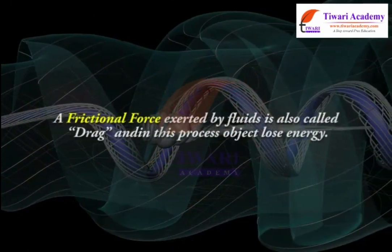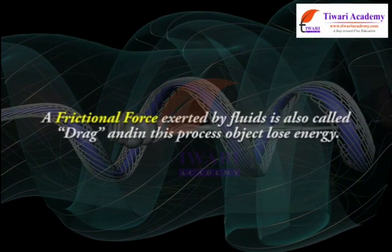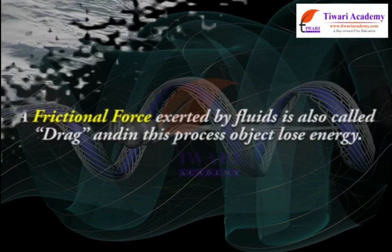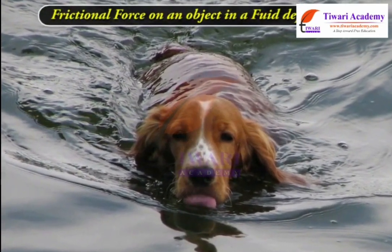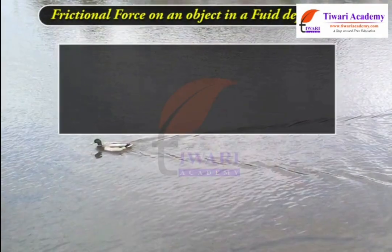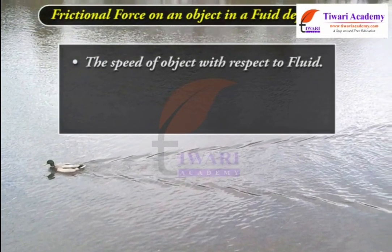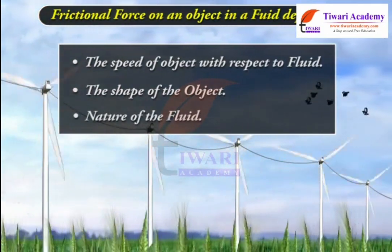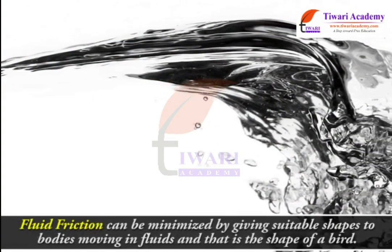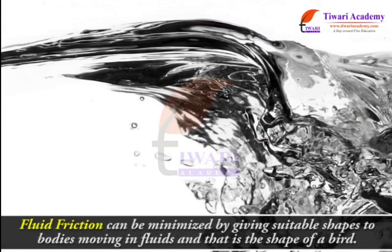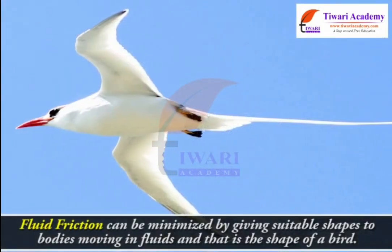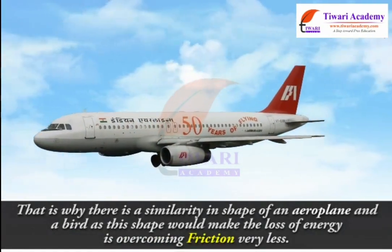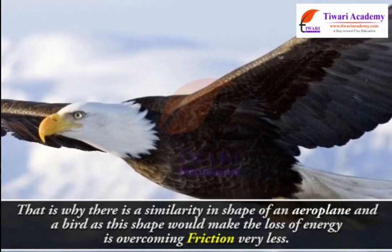A frictional force exerted by fluids is called drag, and objects lose energy in this process. Fluid friction depends on the speed of the object relative to the fluid, the shape of the object, and the nature of the fluid. Fluid friction can be minimised by giving suitable streamlined shapes to bodies moving in fluids — similar to the shape of a bird. That is why aeroplanes and birds have a similar shape, which minimises the energy lost in overcoming friction.